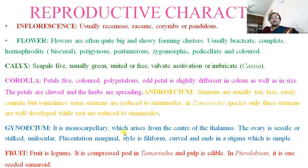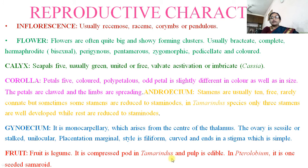Gynoecium: it is monocarpellary, arising from the center of the thalamus. The ovary is sessile, unilocular, and placentation is marginal. Style is filiform and curved, ending in a simple stigma. The fruit is a legume. It is a compressed pod in Tamarindus and the pulp is edible. In Pterocarpus, it is a one-seeded samaroid fruit.